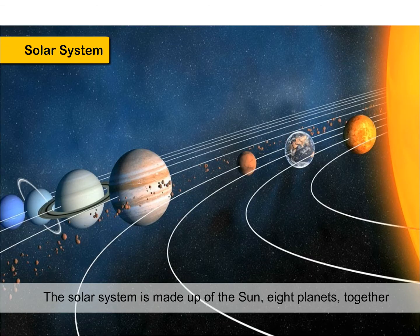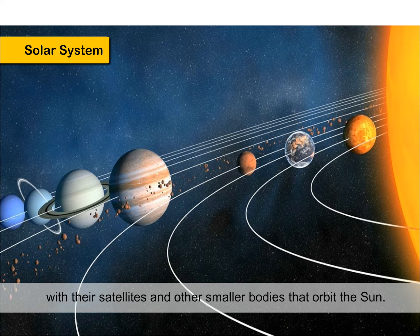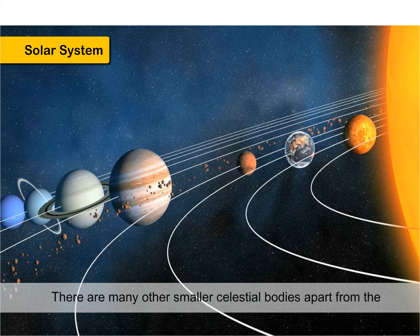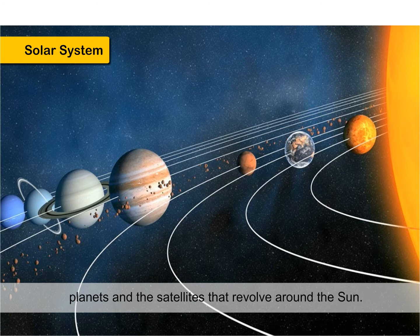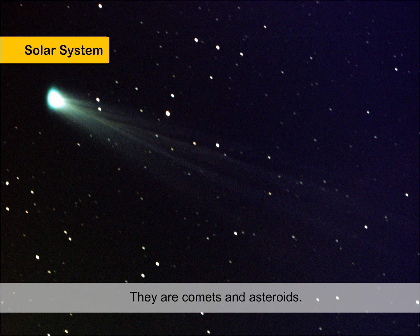Solar System. The solar system is made up of the sun, eight planets, together with their satellites and other smaller bodies that orbit the sun. There are many other smaller celestial bodies, apart from the planets and the satellites, that revolve around the sun. They are comets and asteroids.